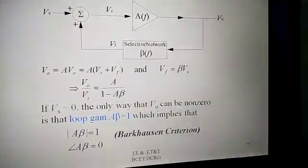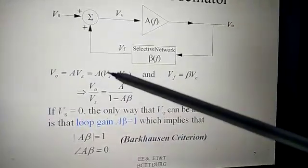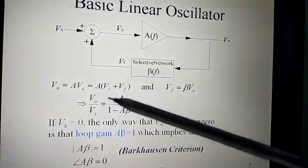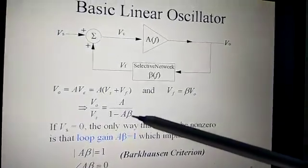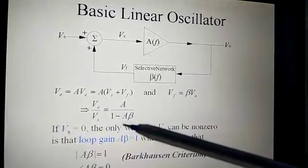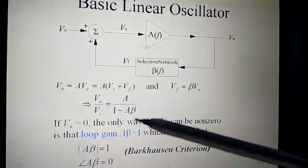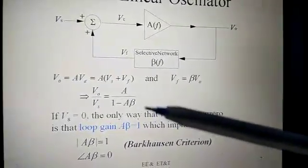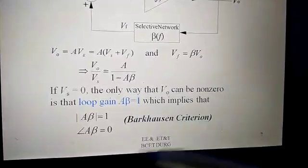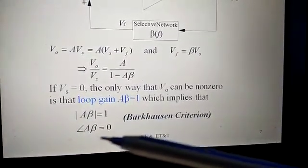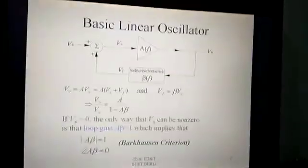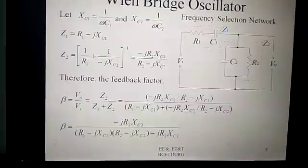For feedback amplifiers, the closed loop gain is V0/Vs = A / (1 + A·beta). While for oscillators, V0/Vs = A / (1 − A·beta). For feedback amplifiers the factor is (1 + A·beta), and for oscillators the factor is (1 − A·beta). This is the difference between the oscillator circuit and the feedback circuit. The oscillator must satisfy the conditions: loop gain A·beta = 1 and the angle of A·beta = 0°. These two criteria are called the Barkhausen criteria, which must be maintained by any oscillator circuit.